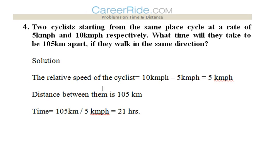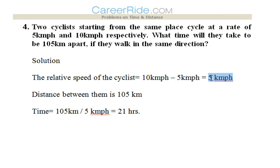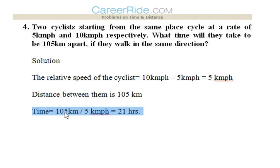The relative speed of the cyclists would be 10 km per hour minus 5 km per hour. We need to remember the concept in relative speed: when two bodies move in the same direction, the speeds are subtracted — the smaller speed is subtracted from the bigger speed. When two bodies travel towards each other, the speeds are added. So here, 10 minus 5 equals 5 km per hour. The distance between them is 105 km, so time required would be 105 divided by 5, that is 21 hours.